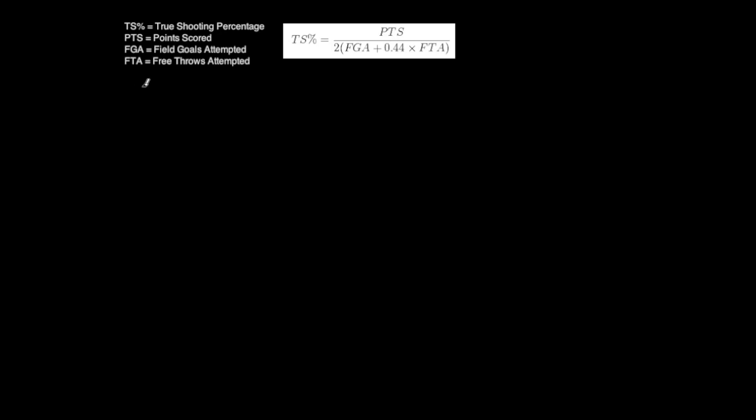The easiest way for me to do this was first to look at the case where there were zero free throws attempted, so just looking at field goals. If there were zero free throws attempted, then our formula would look like true shooting percentage equals points over two times field goals attempted, because the 0.44 times zero would just become zero.